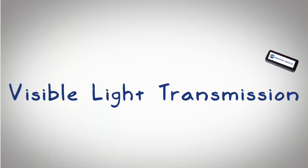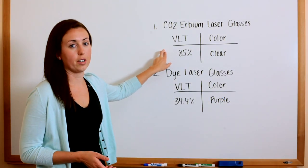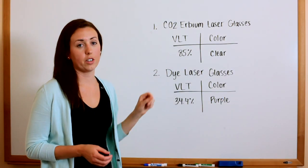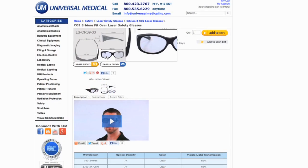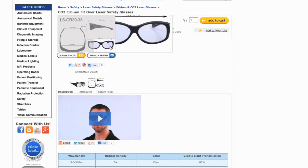For example, our first one is the CO2 erbium laser glasses with a visible light transmission of 85%. This means the lens color is actually going to be clear.